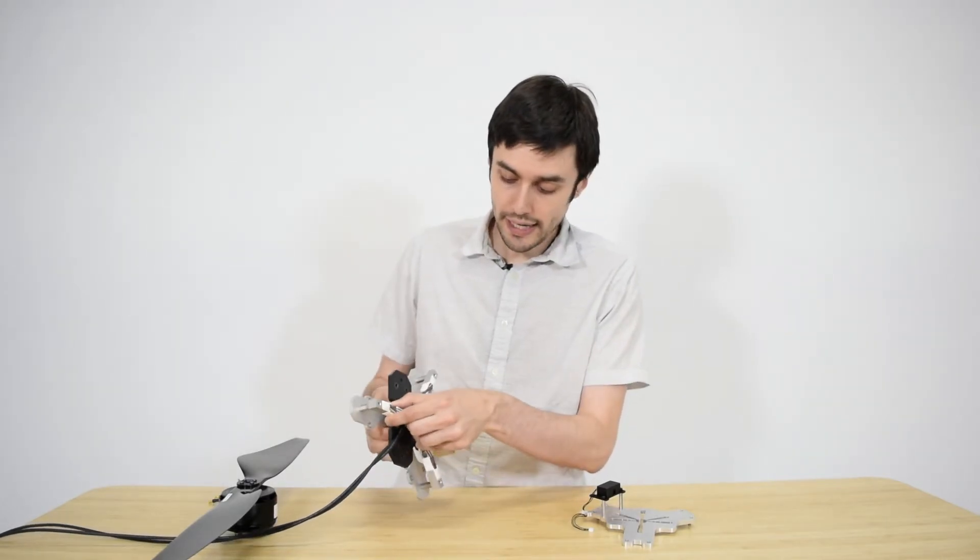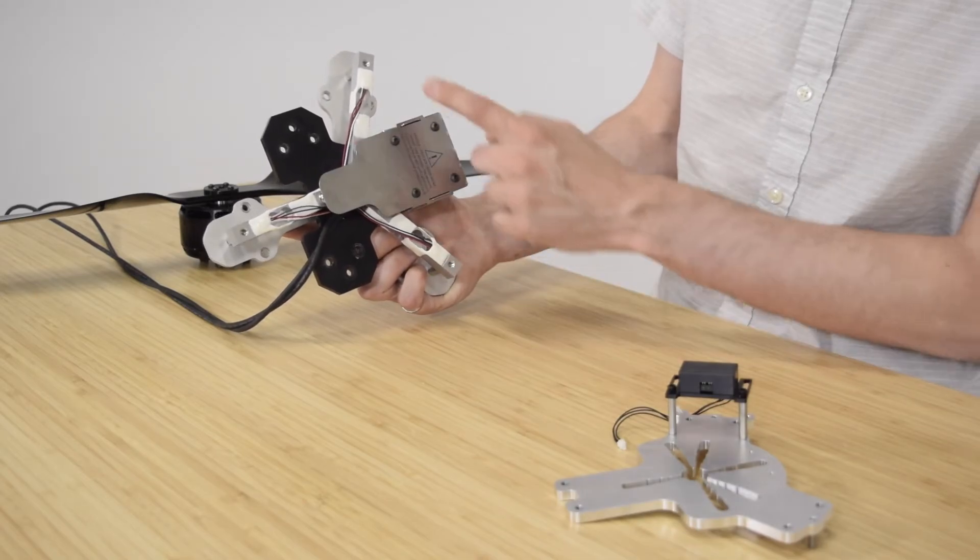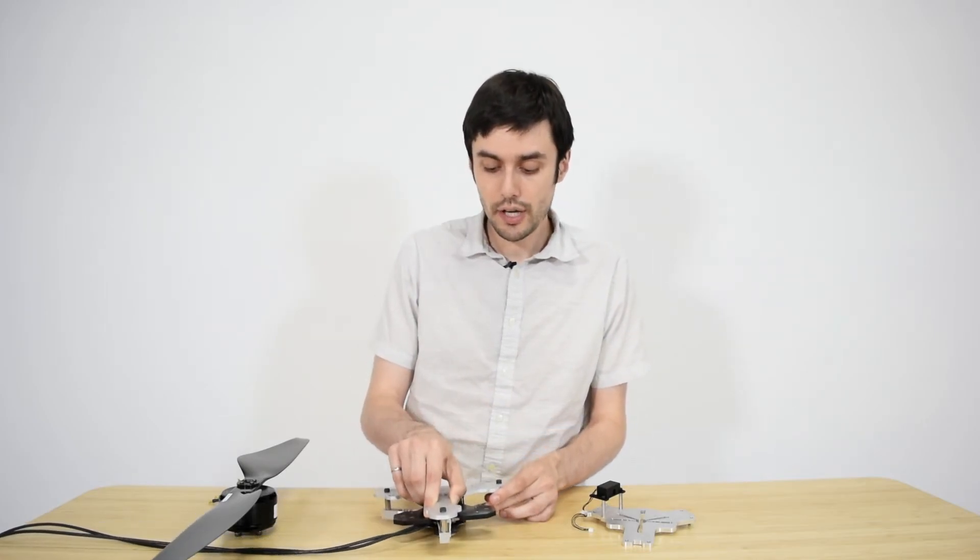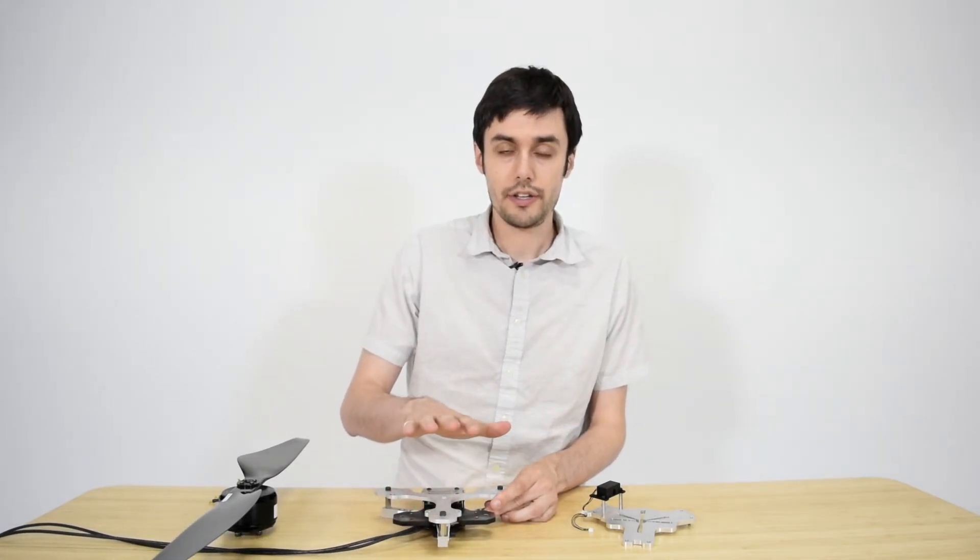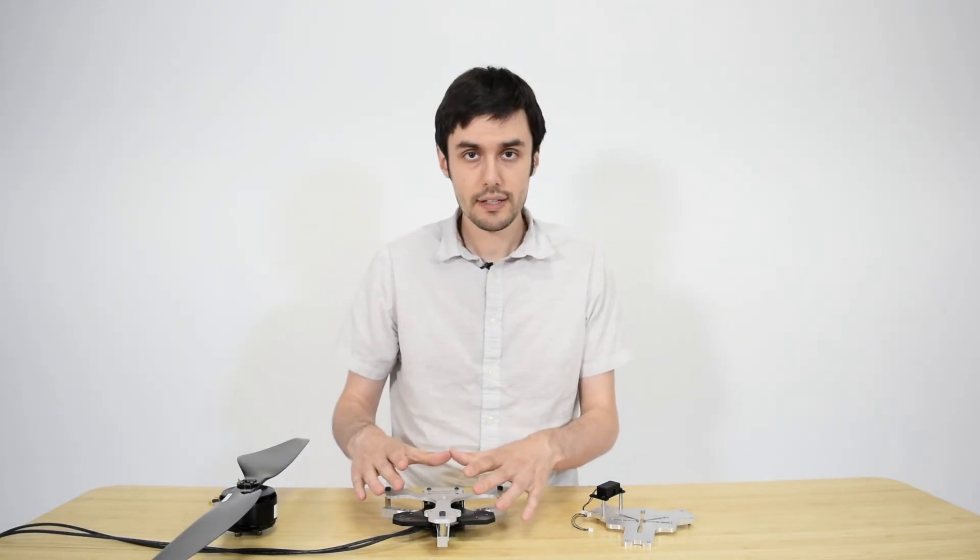What you can see here is that we have three load cells. And each of those load cells is measuring two forces. So there's a total of six forces that are measured. And after a calibration procedure, we're able to measure the exact torque and thrust that is applied on the motor mounting plate by the motor.